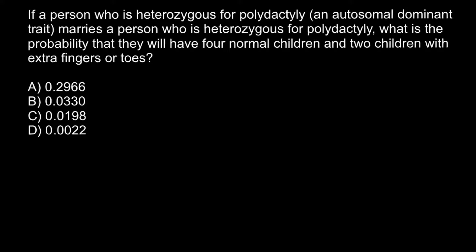Let me use the dominant allele 'A' to designate this genetic disorder. This is an autosomal dominant genetic disorder, so the normal allele would be lowercase 'a'. This is where you can make a mistake — this is the first step in our calculations. We have two parents who are both heterozygous, so the genotype of each parent would be capital A and lowercase a.